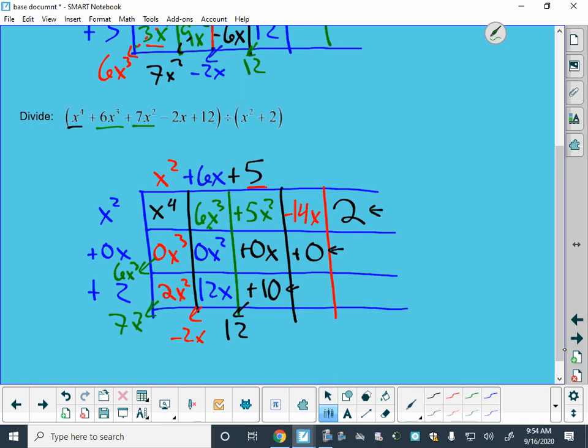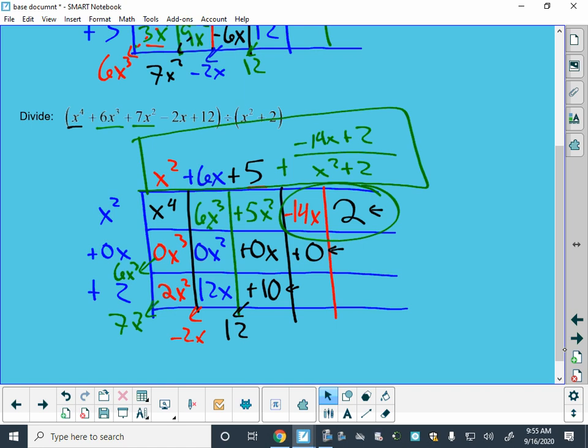This is my remainder. So I'm just going to add on that remainder when I was dividing by x squared plus 2. And this is my answer to that division problem.